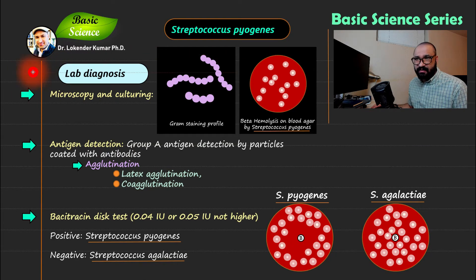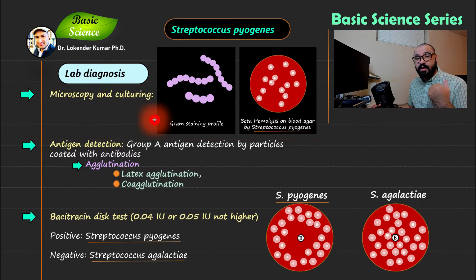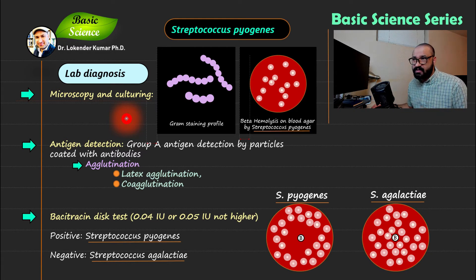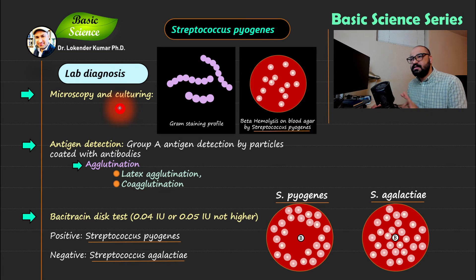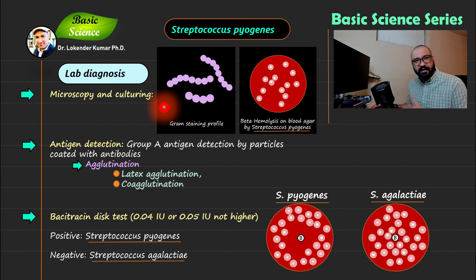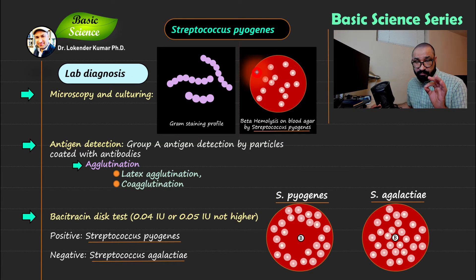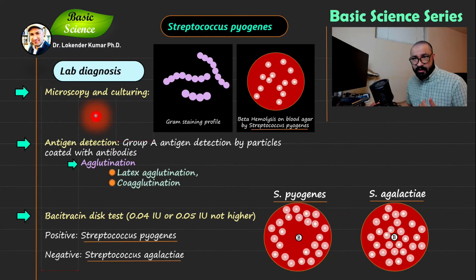Now let's discuss lab diagnosis of Streptococcus pyogenes. Point number one is microscopy and culturing. This organism is gram-positive, so gram staining will show gram-positive cocci — circular cells present in chains, which is the specific feature of Streptococcus pyogenes. On blood agar, after culturing, you will see beta-hemolysis. These two features — chains of round cells on gram staining and beta-hemolysis on blood agar — are important for preliminary diagnosis.